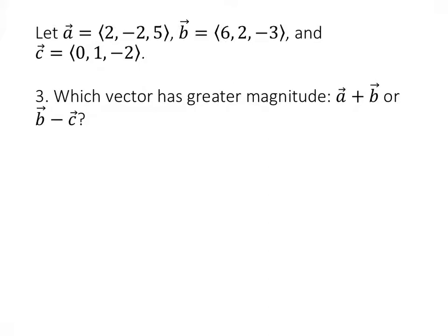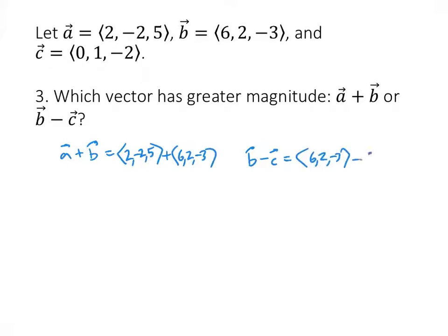Now we're asked which vector has the greater magnitude: A + B or B − C. So we need to compute both vectors. A + B = (2, -2, 5) + (6, 2, -3) = (8, 0, 2). And B − C = (6, 2, -3) − (0, 1, -2) = (6, 1, -1).